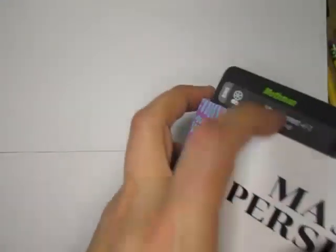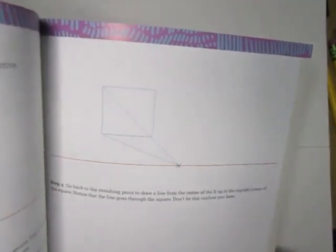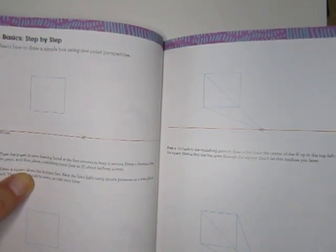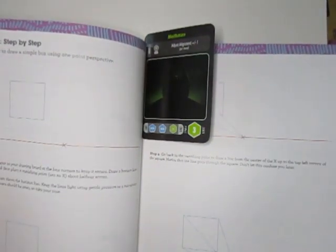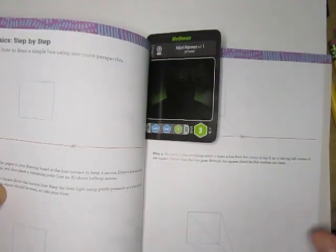Okay, okay, it's not even because my pad's not even on the table here or the camera's a little off. So, square - it says tape the paper to your drawing board at the four corners to keep it secure. Draw a horizon line across the page and then place a vanishing point, use an X, about halfway across.